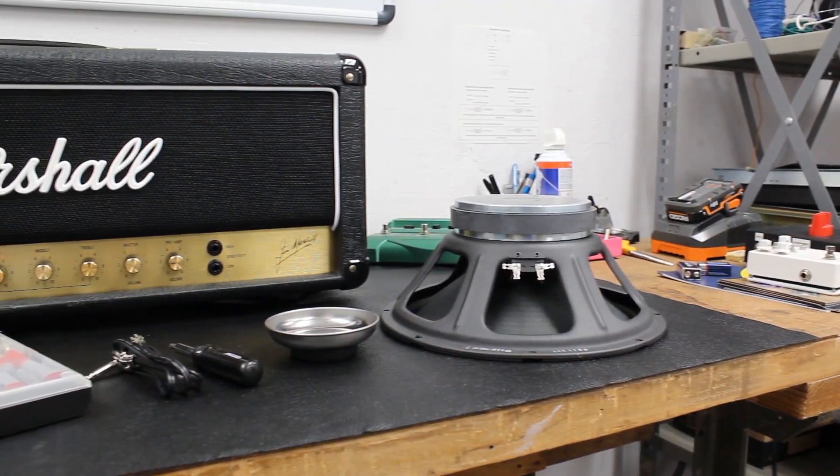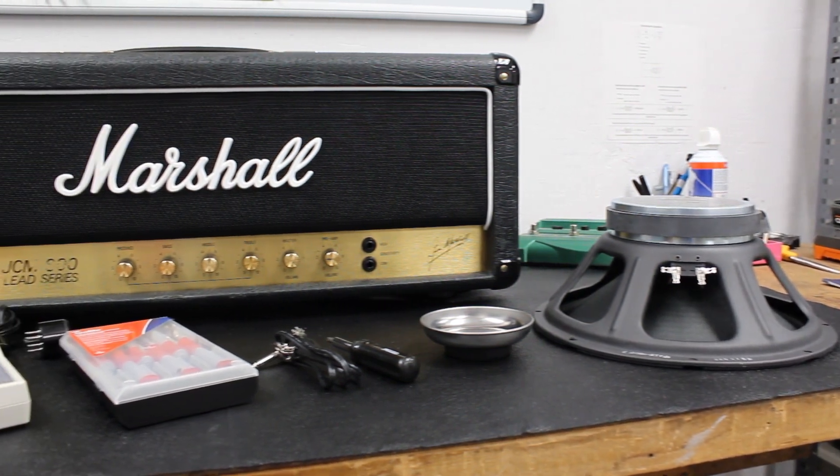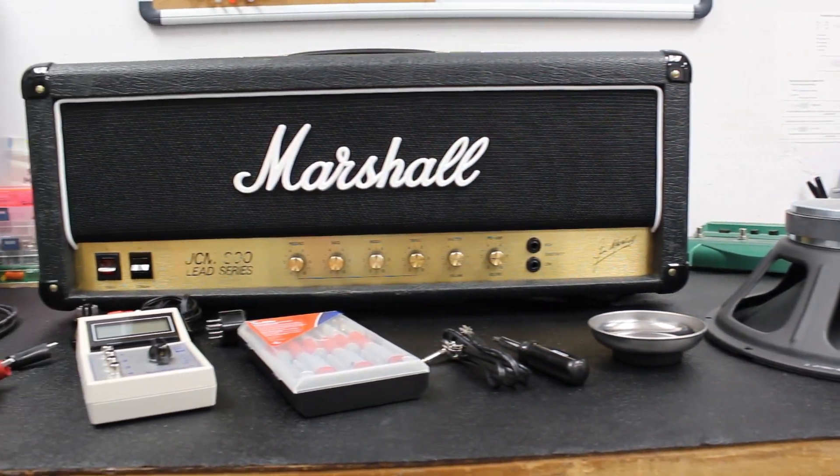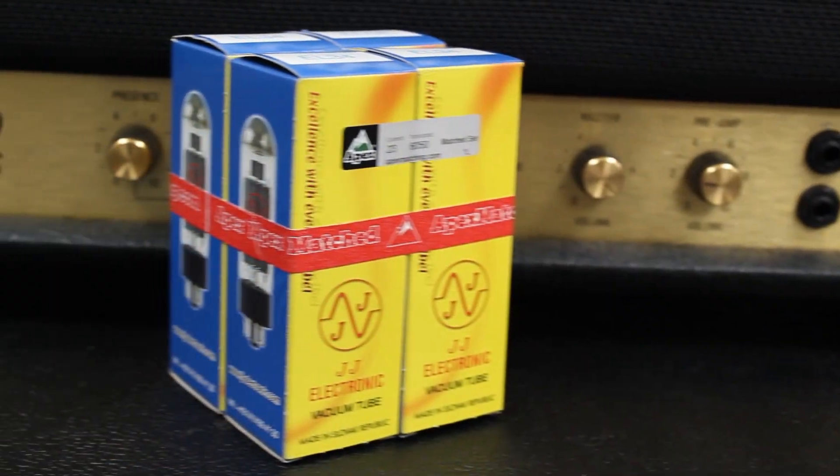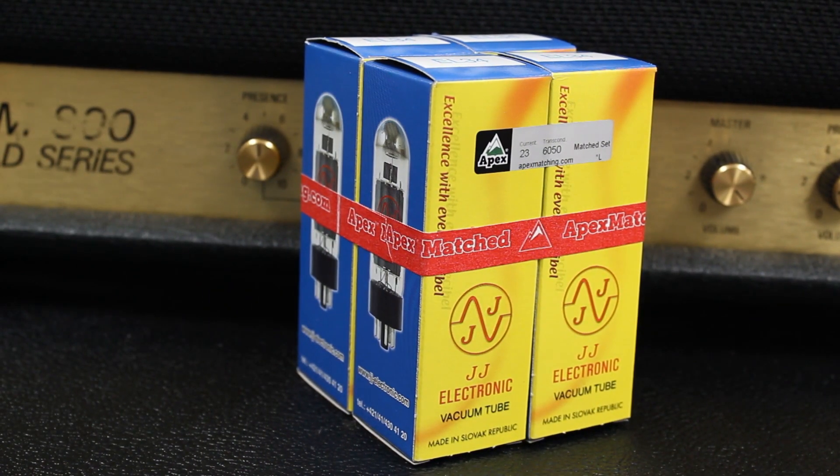To bias an amp, you will need a few tools. If you need any of the parts or tools required, check the description for links to everything we use in this video. First, you will need a matched set of power tubes. We recommend a set of Apex matched tubes.